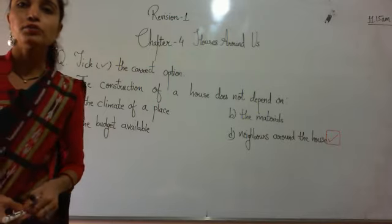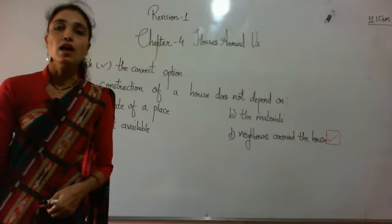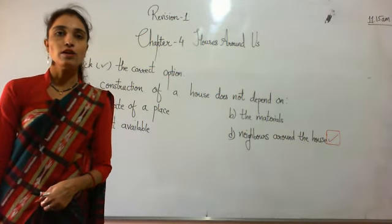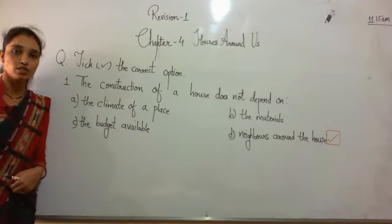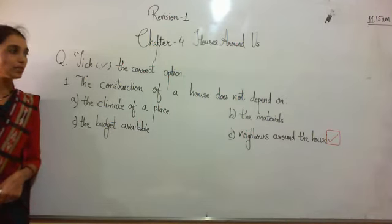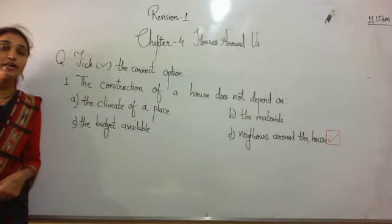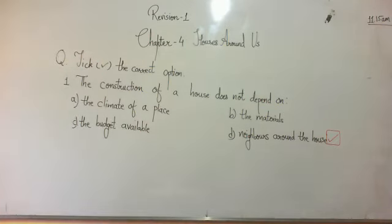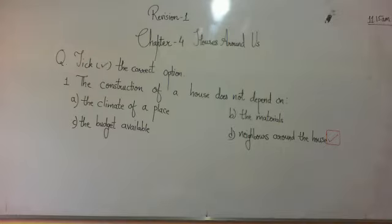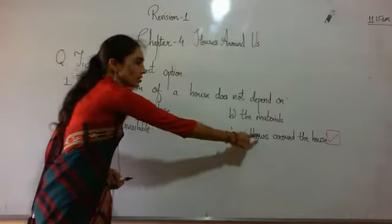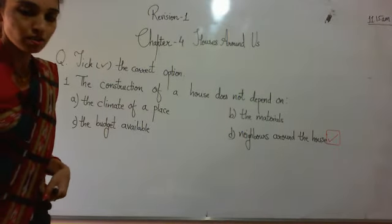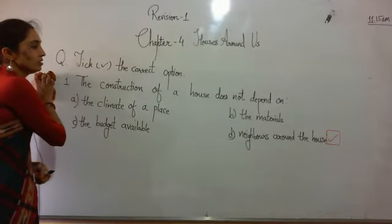You have to write this revision in your homework section. Write it down in good handwriting and don't do unclean work. So option D is correct — neighbors around the house. The construction of a house does not depend on the neighbors around the house.